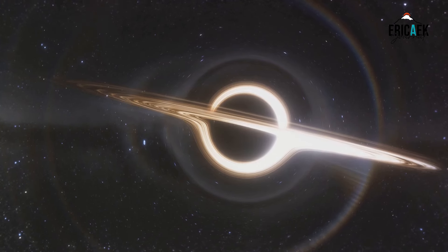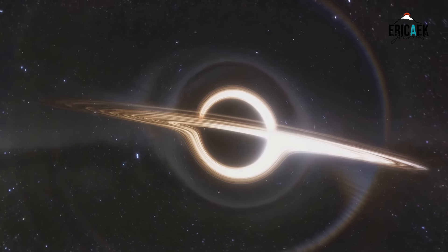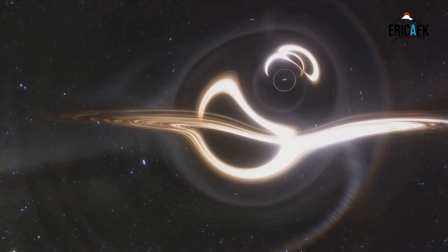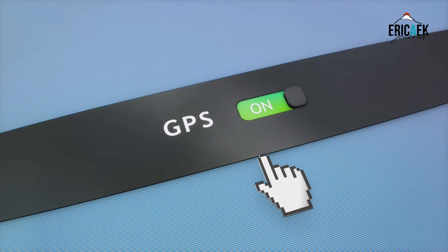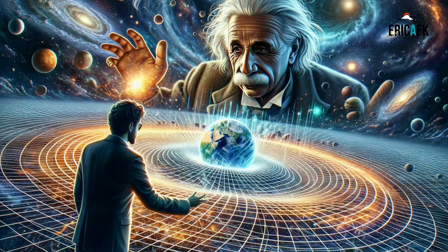Now, if we didn't account for the bending of space-time caused by Earth's mass, these signals would travel in straight lines, and your GPS coordinates would be off by several kilometers. Imagine trying to find your favorite coffee shop and ending up in the middle of nowhere. Thanks to Einstein's theory of relativity, we understand that the paths of these signals are curved, not straight.